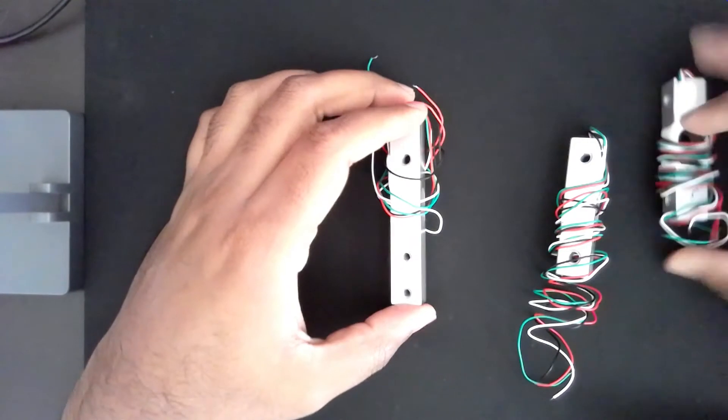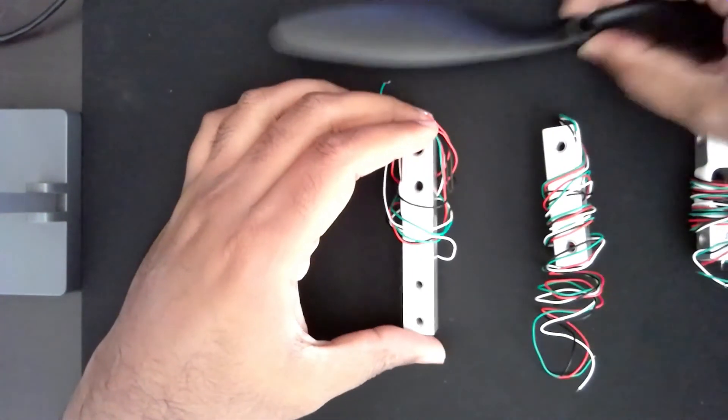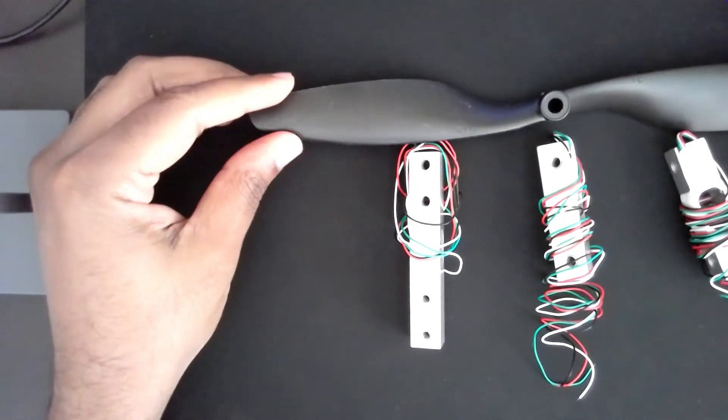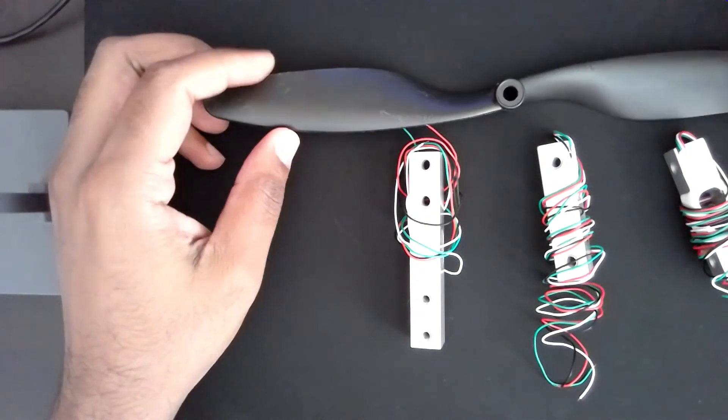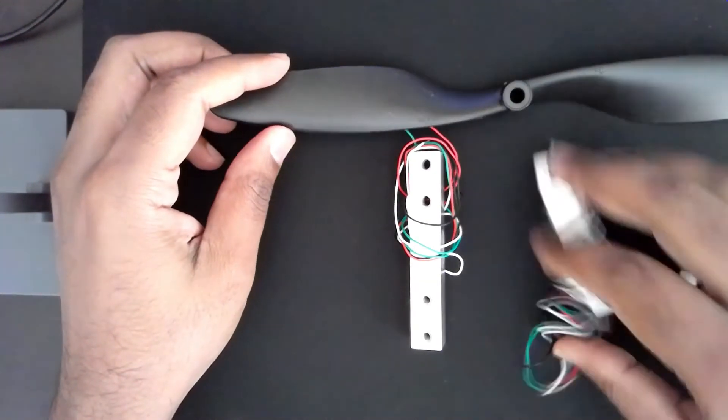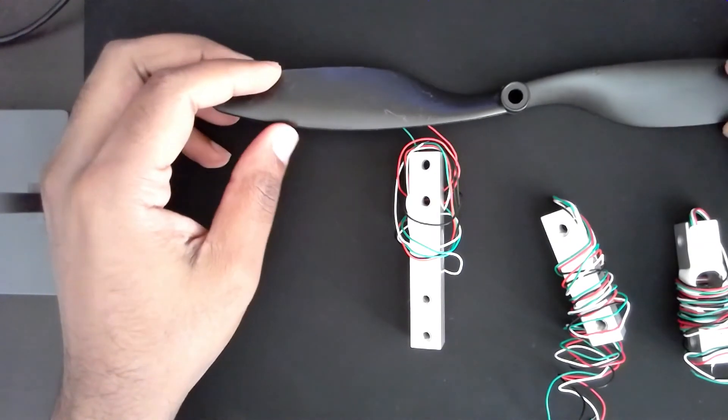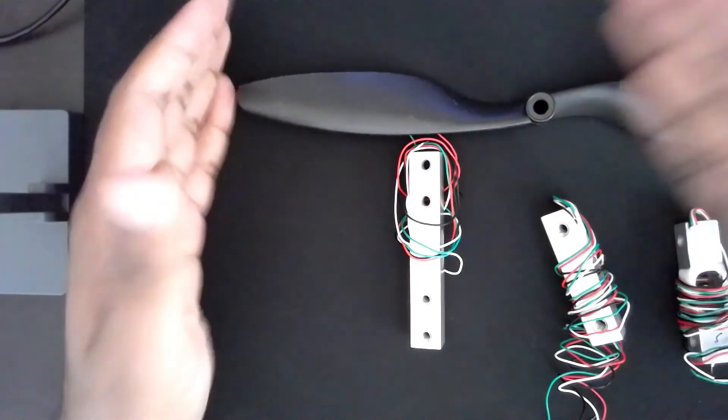So that's the reason why you want to have a load cell and you want to have a good analog to digital converter, because it can help you measure the force of your propellers. And based on that information you can come up with whether you want a two blade propeller or a three blade propeller, what would be the diameter, what would be the pitch.